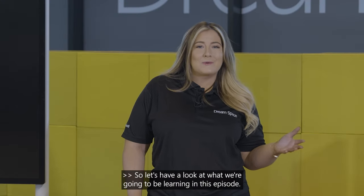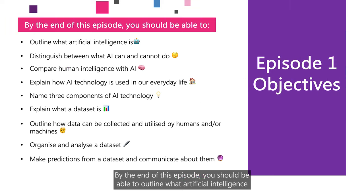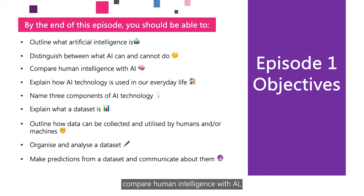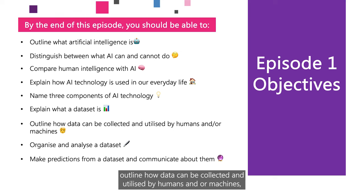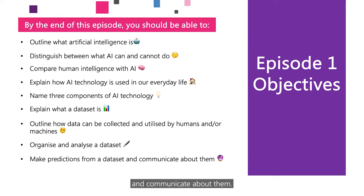Let's have a look at what we're going to be learning in this episode. By the end of this episode, you should be able to outline what artificial intelligence is and its history, distinguish between what AI can and cannot do, compare human intelligence with AI, explain how AI technology is used in our everyday life with examples, name three components of AI technology, explain what a data set is, outline how data can be collected and utilized by humans and machines, organize and analyze a data set, and make predictions from a data set and communicate about them.